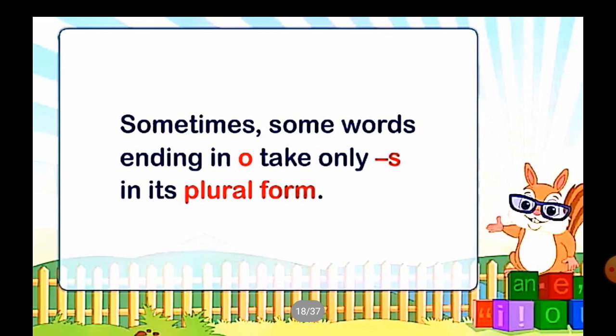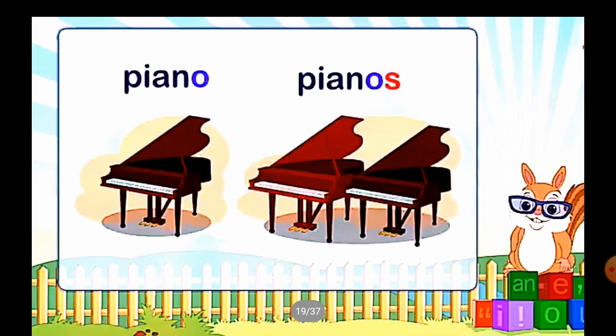Sometimes, some words ending in O take only S in their plural form. Some words that end in O convert to plural with only S added. For example: 'Piano' ends in O, so the plural form will be 'pianos'.